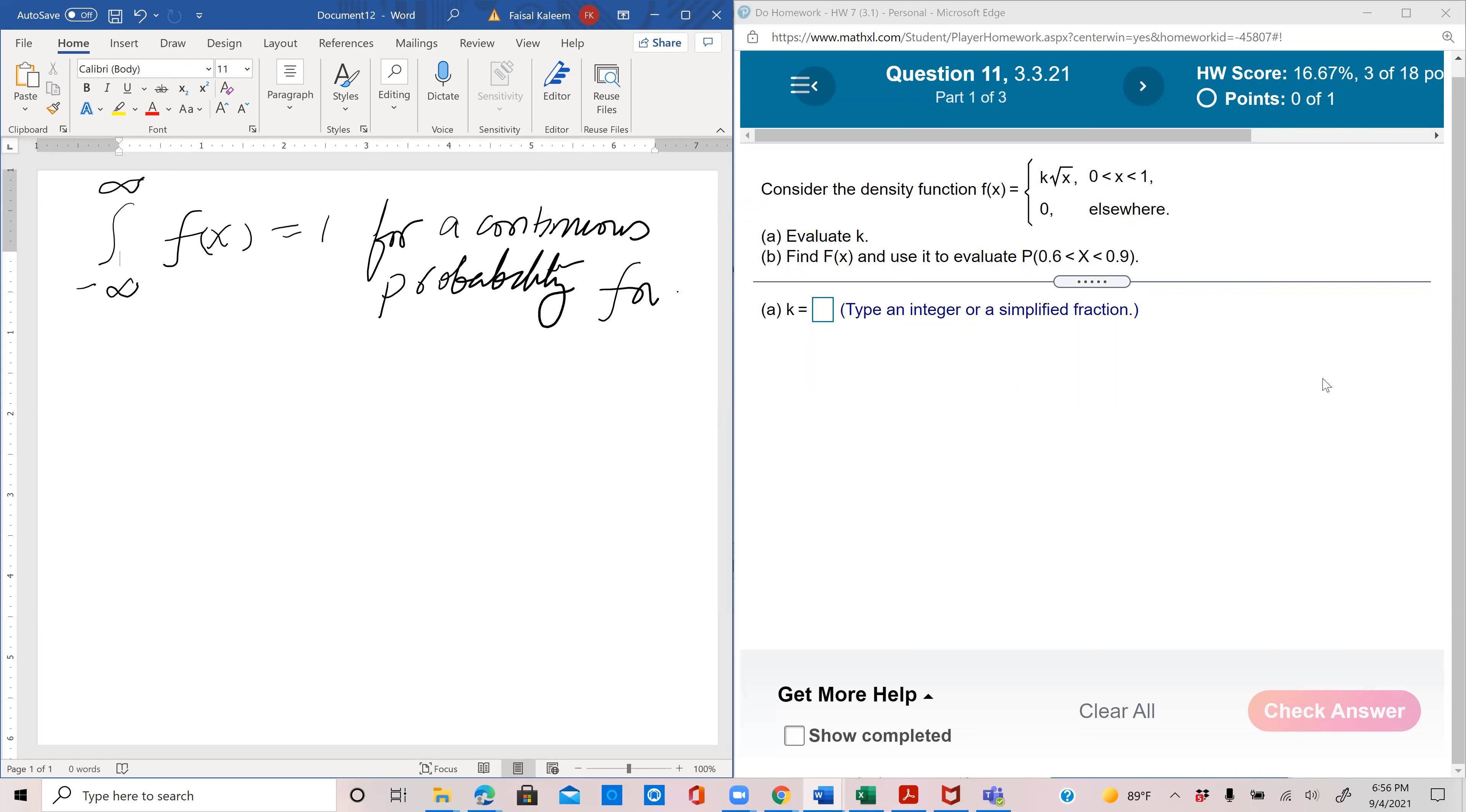So now the integral from negative infinity to infinity is in effect just the integral from 0 to 1 because everywhere else it's 0. So in this case it's 0 to 1, k square root x.